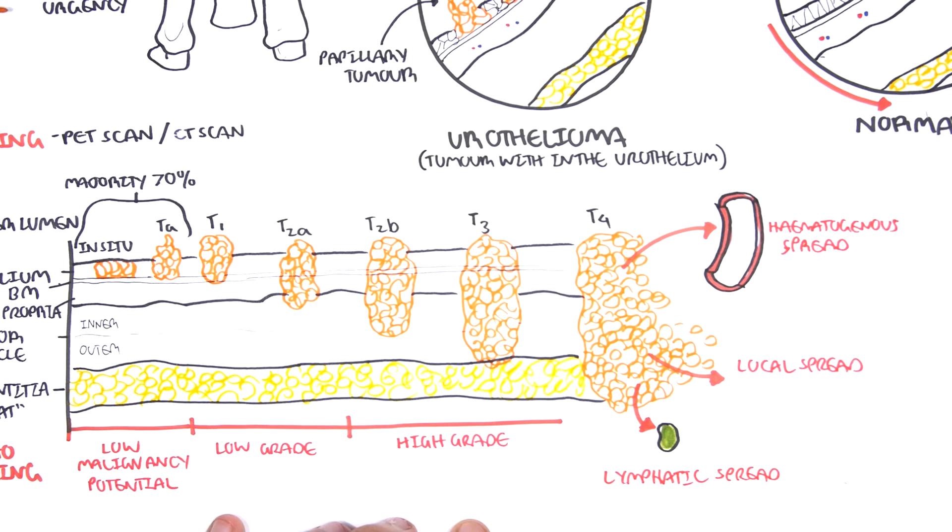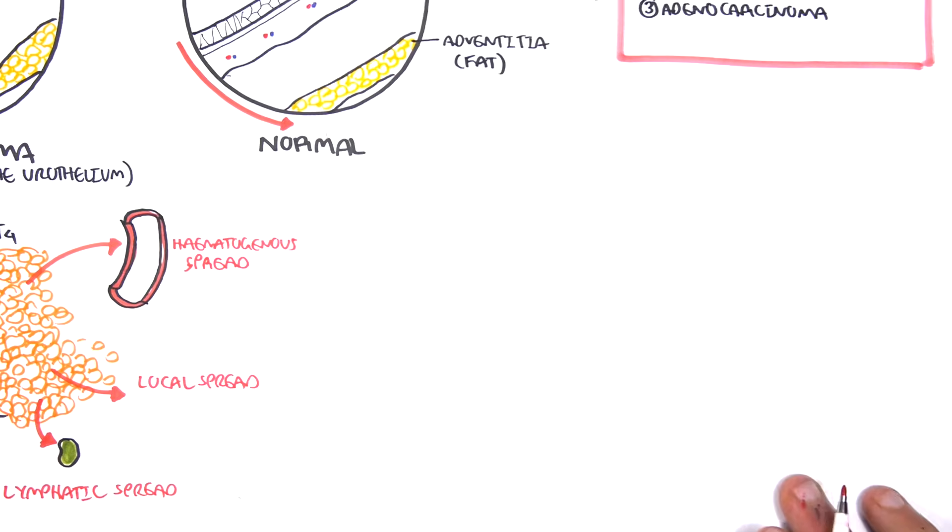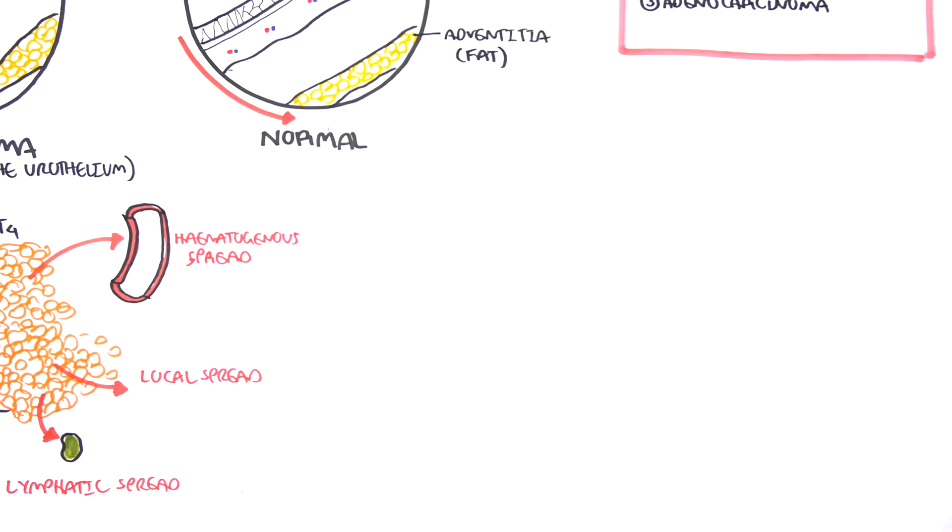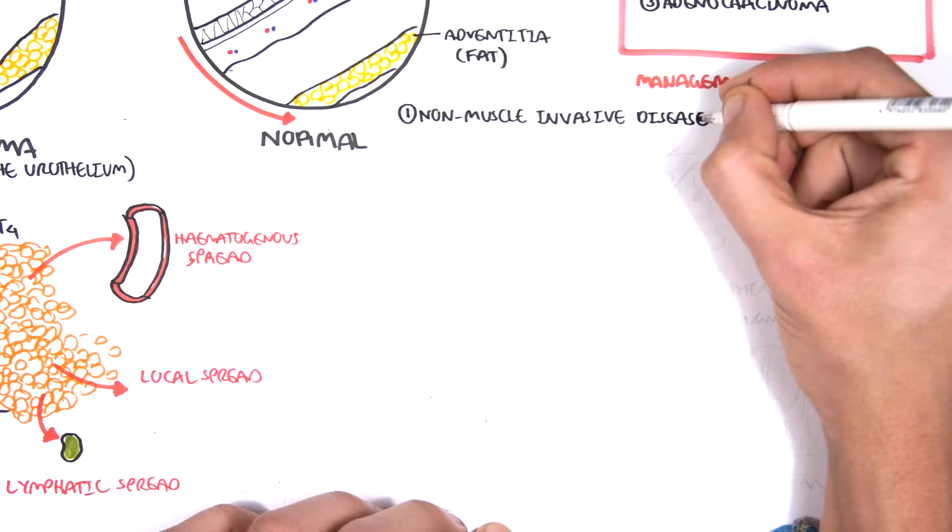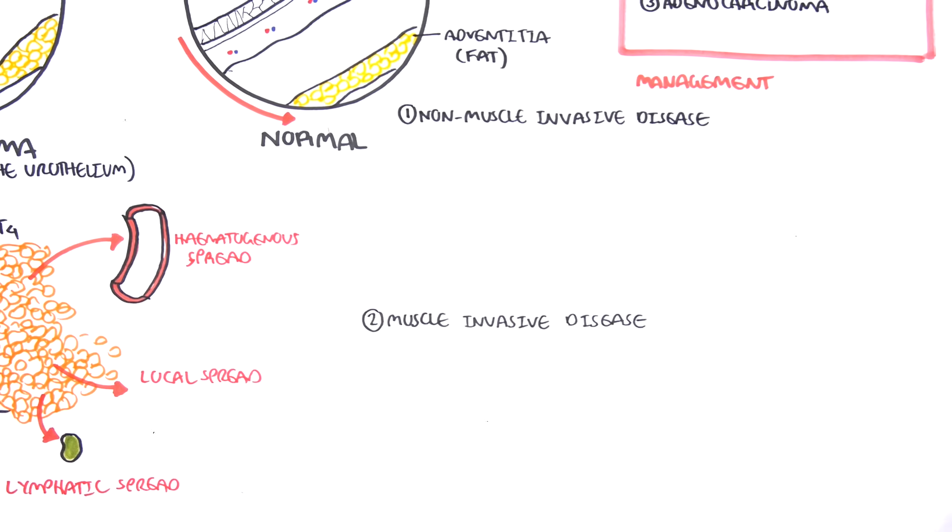The staging of the bladder tumor into low grade and high grade is important because this will tailor the treatment. And the treatment will depend on if the tumor has invaded the muscle layer or not. So the management, the treatment, focuses on non-muscle invasive disease and muscle invasive disease. Muscle invasive disease has poorer prognosis.